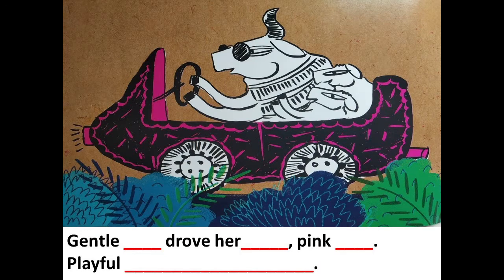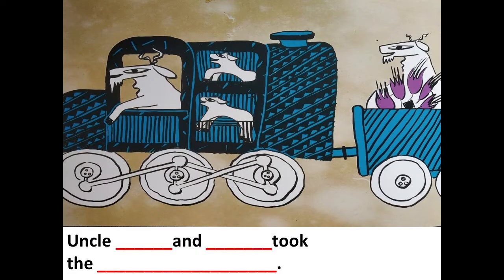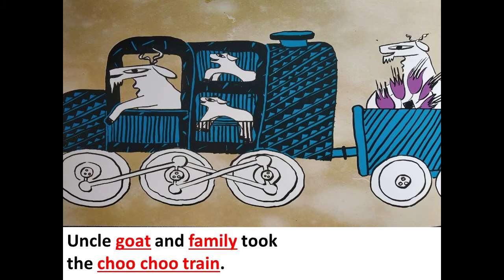'Gentle — drove her — pink — playful —.' Now I have left out some words and also a sentence. Let's take a look: 'Gentle cow drove her shiny pink car. Playful calf came with her.' All the missing words and sentences are written in red. Next: 'Uncle — and — took the —.' Uncle goat and family took the choo-choo train.